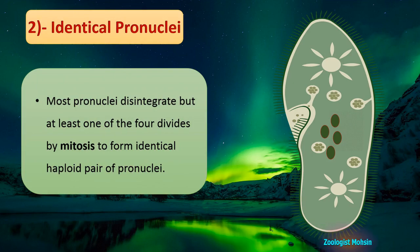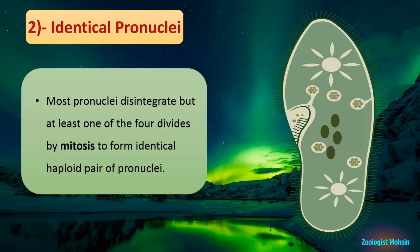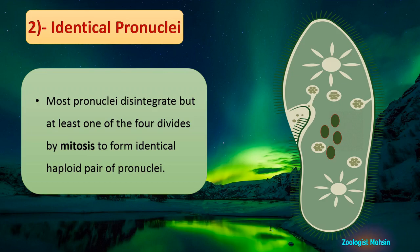Most pronuclei disintegrate, but at least one of the four divides by mitosis to form an identical haploid pair of pronuclei. This is necessary because when cells exchange their pronuclei with each other, they must retain a copy at home so they don't lose their own genes. Each cell must have two identical copies of each pronucleus that is to be exchanged.